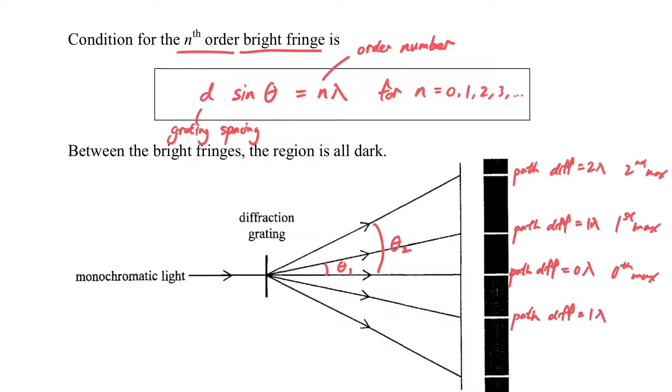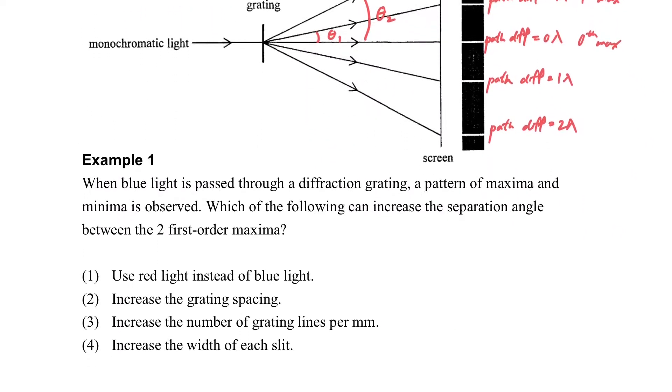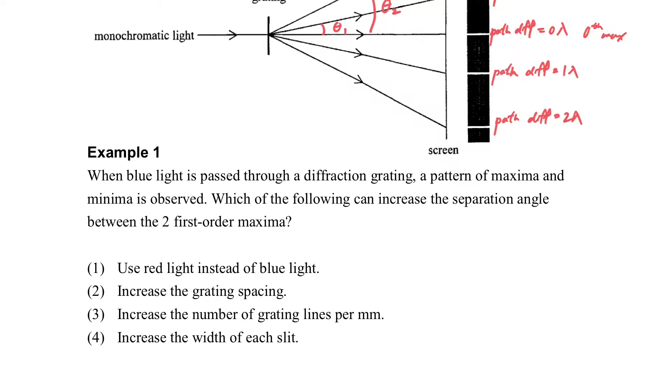The figure shows you more about the theta. Theta for the first order we call θ₁, and the theta for the second order is θ₂. Let's take a look at an example. Example 1: when blue light is passed through the grating, which of the following can increase the separation angle between the two first-order maxima?